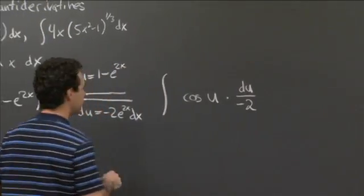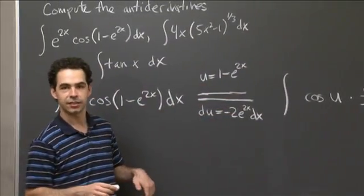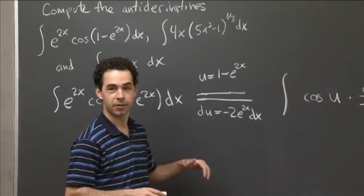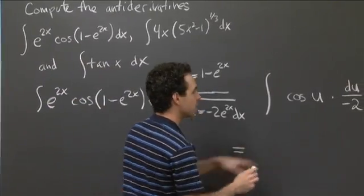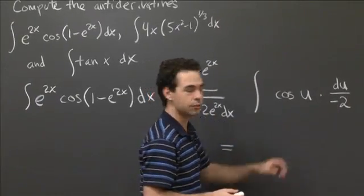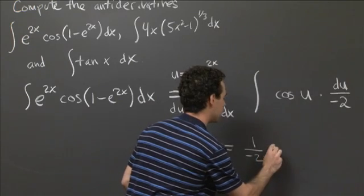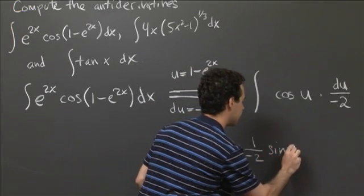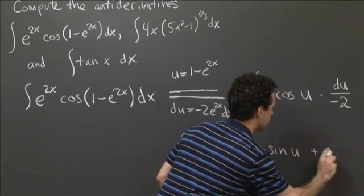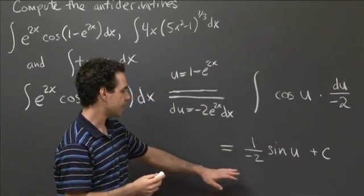All right. Well, that's not that bad because we know that the derivative of sine is cosine. So the antiderivative of cosine is sine. So this is equal to, so that minus 2, that 1 over minus 2 is just going to stick around. So it's 1 over minus 2 sine of u plus a constant, of course, plus an arbitrary constant.